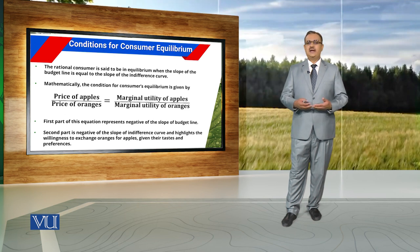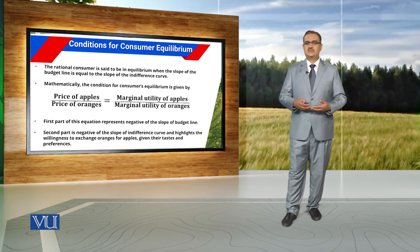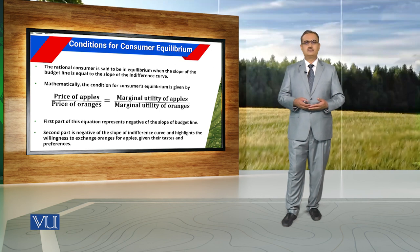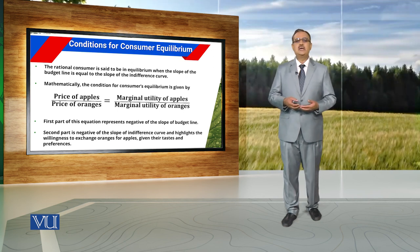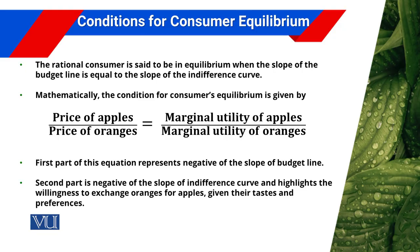A rational consumer, when we say he is in equilibrium, is in fact maximizing his satisfaction under a given budget constraint. Mathematically, the condition of consumer equilibrium is defined as: the slope of the budget line is equal to the slope of the indifference curve. As both slopes are negative, we cancel out the negative sign from both sides of the equation.